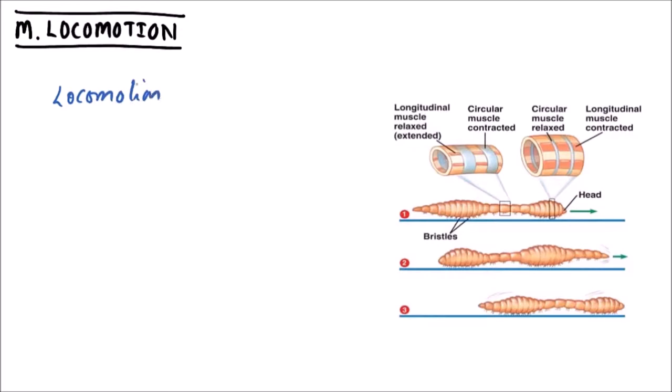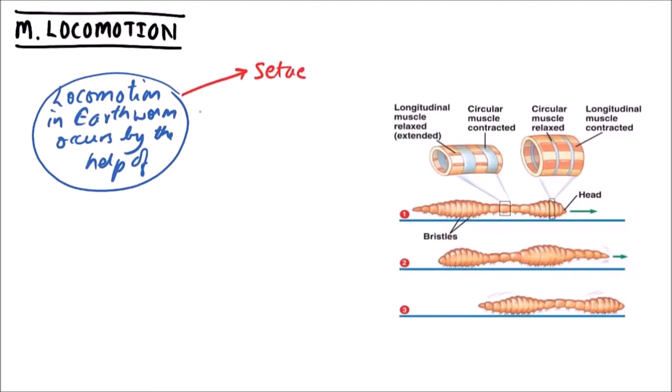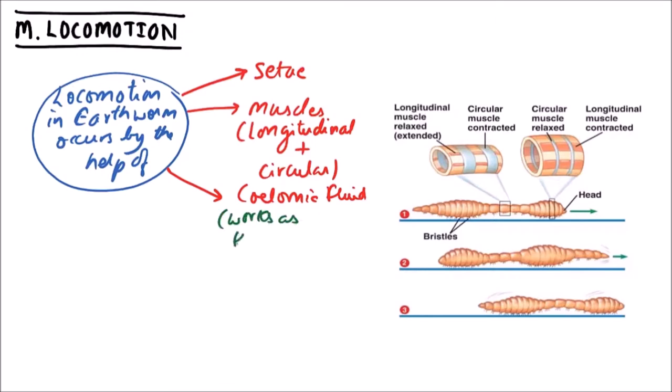Locomotion in earthworm occurs by the help of setae muscles. These muscles are longitudinal and circular type, and third one is coelomic fluid that works as hydraulic skeleton.